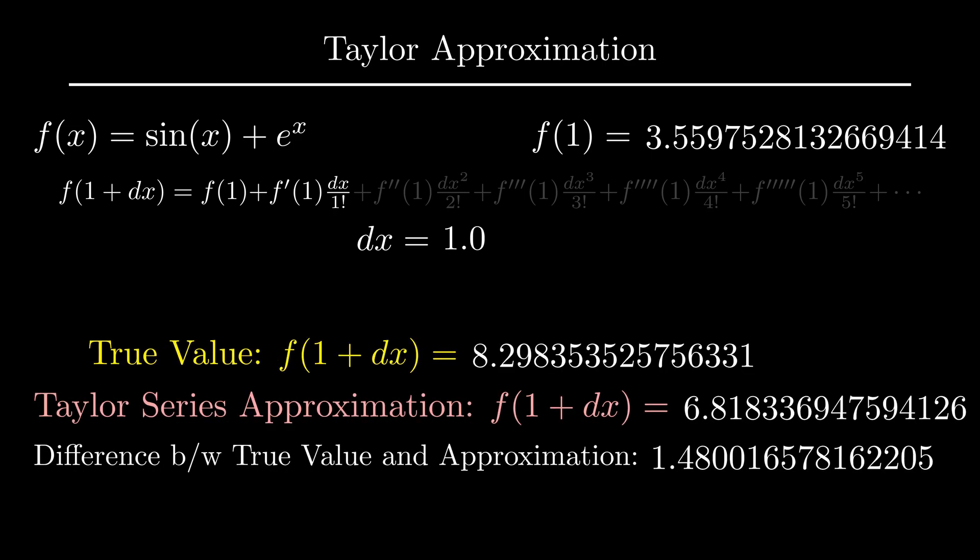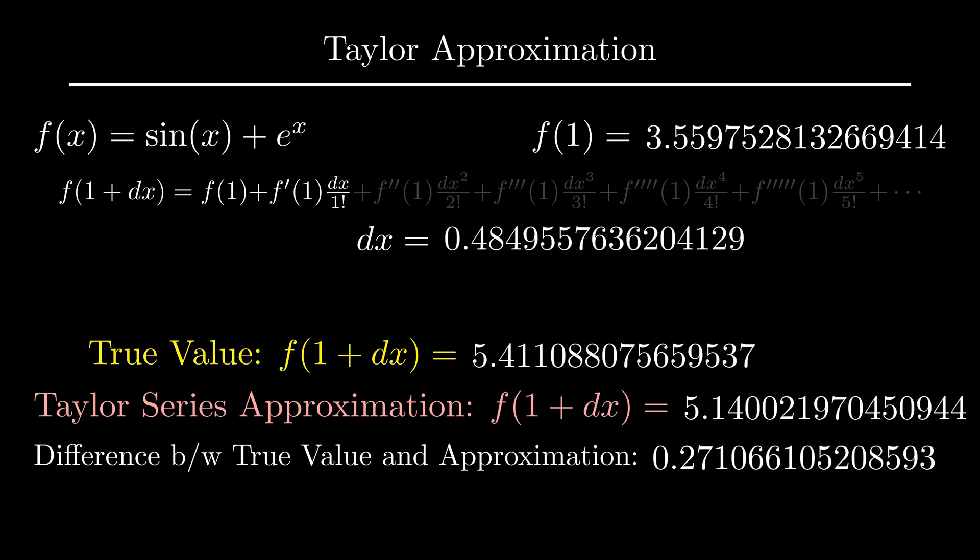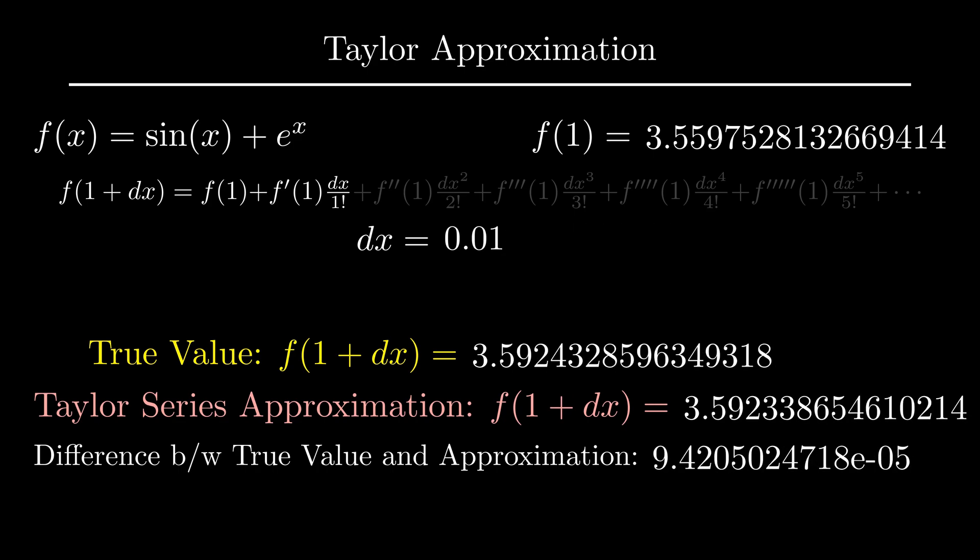This is because for Taylor approximations to be accurate, dx must be small. You can see here, as I reduce the value of dx, approximation gets closer and closer to the true value.